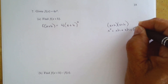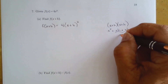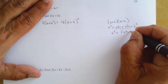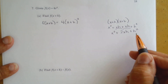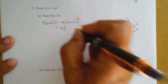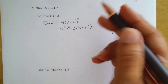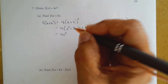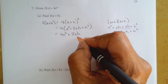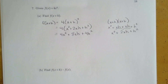Last term: h times h is h squared. The two middle terms, xh plus xh, combine to give 2xh. So (x plus h) squared equals x squared plus 2xh plus h squared. Now multiply through by 4: 4 times x squared is 4x², 4 times 2xh is 8xh, and 4 times h squared is 4h². So f of x plus h equals 4x² plus 8xh plus 4h².